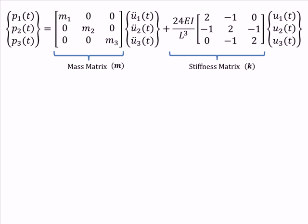To review, recall from the last presentation that the matrix equation of motion for a three-story shear building looks like this, with the mass and stiffness matrices.